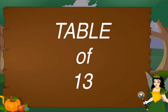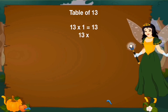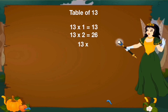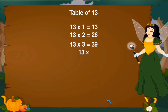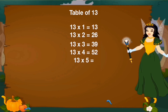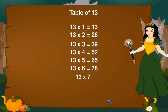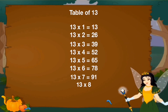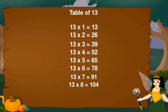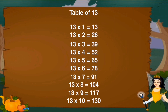Let's revise table of 13. 13 1's are 13, 13 2's are 26, 13 3's are 39, 13 4's are 52, 13 5's are 65, 13 6's are 78, 13 7's are 91, 13 8's are 104, 13 9's are 117, 13 10's are 130.